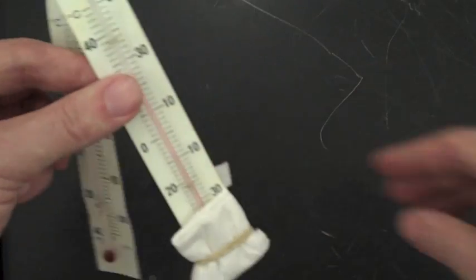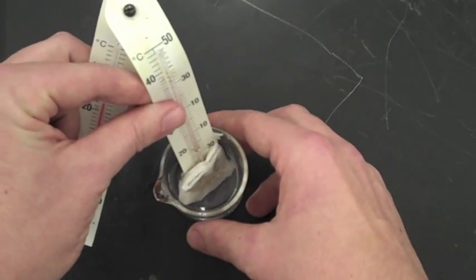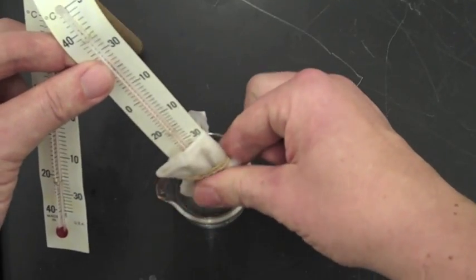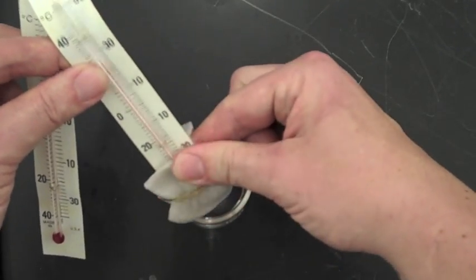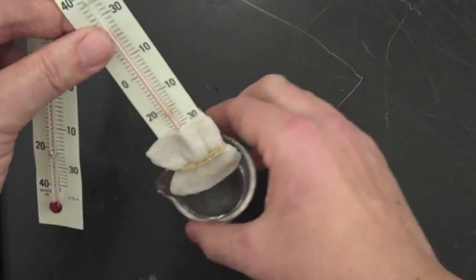What I'm going to do for the wet bulb is take a beaker of water and submerge the sock into the water. Now evaporation is going to be a cooling process here. So I'm going to see how much evaporation is going to take place within this air mass today.